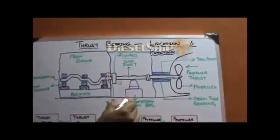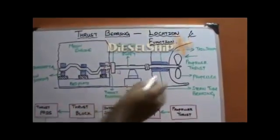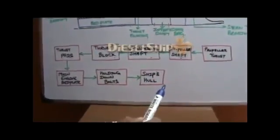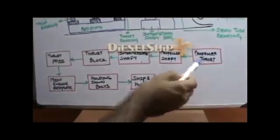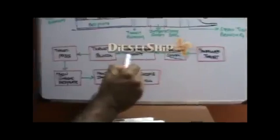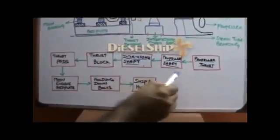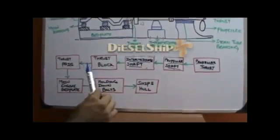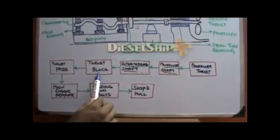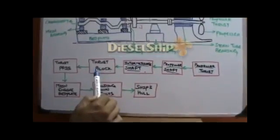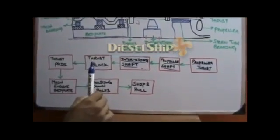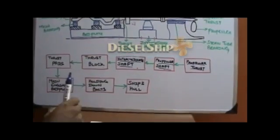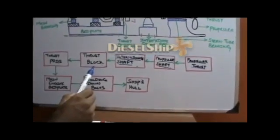The bed plate is bolted down to the ship's hull. The intermediate shaft bearing is also bolted down to the ship's hull, and the stern tube bearing forms part of the aft peak bulkhead and tank. As the propeller rotates, it creates a propeller thrust which is taken up by the propeller shaft and passed on to the intermediate shaft. This thrust is further absorbed by the thrust block. The main reason the thrust block is placed at the aft-most part of the engine is to protect the crankshaft — the crankshaft should never be subjected to propeller thrust.